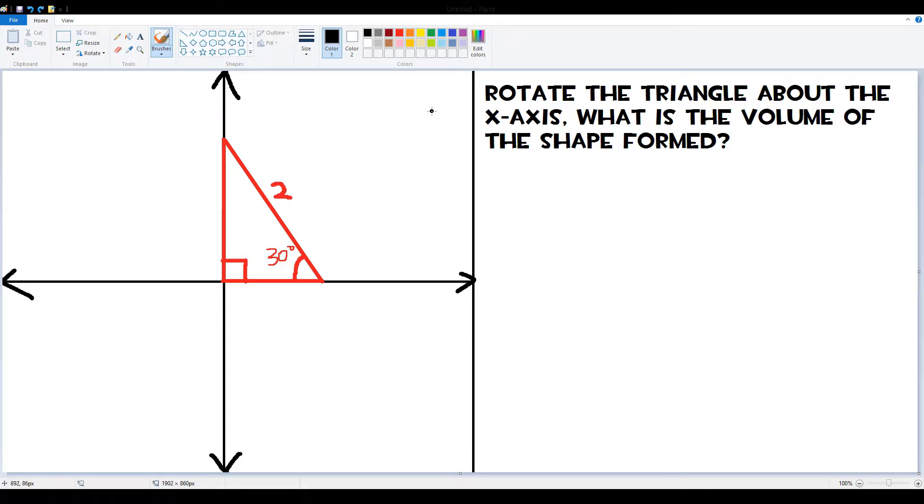So rotate the triangle about the x-axis right there. What is the volume of the shape formed? So here's the triangle, it's in red.